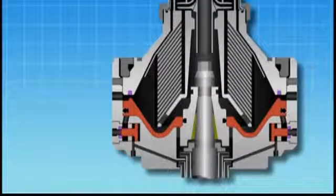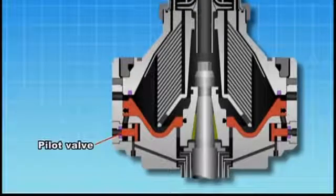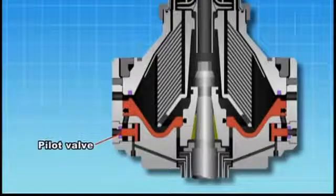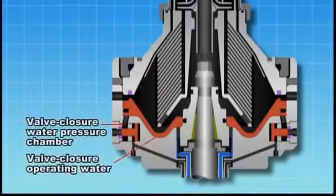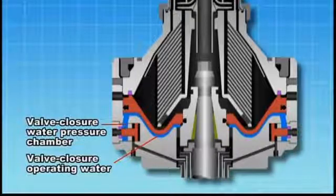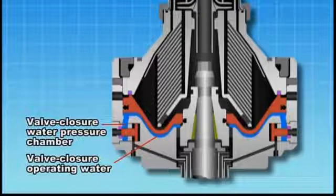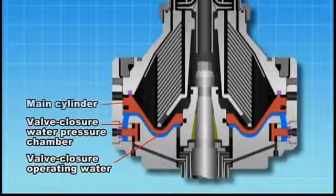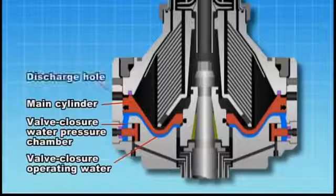Let's have a close look at the purification process. When the bowl reaches the rated speed, the centrifugal force that acts upon the pilot valve seals the valve seat, and the valve closure water pressure chamber becomes filled with valve closure operating water. The operating water in the valve closure water pressure chamber pushes up the main cylinder using pressure generated by centrifugal force to close the discharge hole.